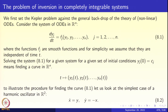Let's begin the problem. We first set the Kepler problem against the general backdrop in the theory of non-linear ODEs. In equation 8.1, you see a system of non-linear autonomous ordinary differential equations: dyj/dt = fj(y1, y2, ..., yn), j running from 1 to n. These functions fj's are assumed to be smooth functions and for simplicity, let us assume they are independent of time — that is, the system is autonomous.